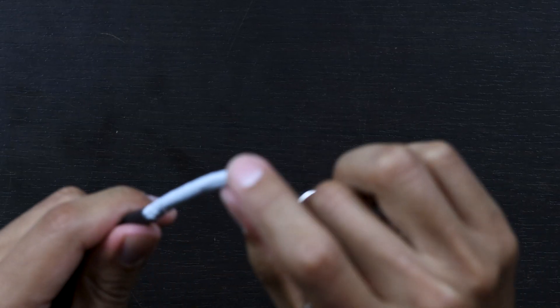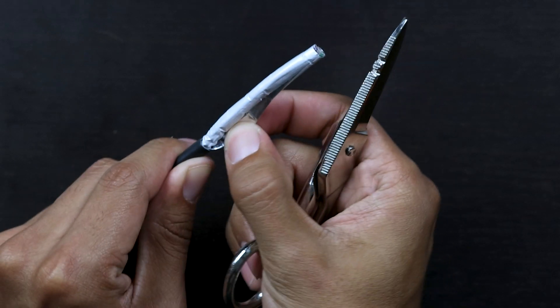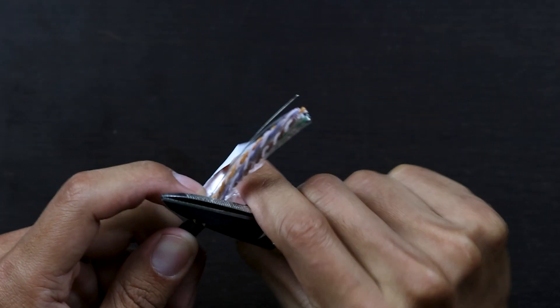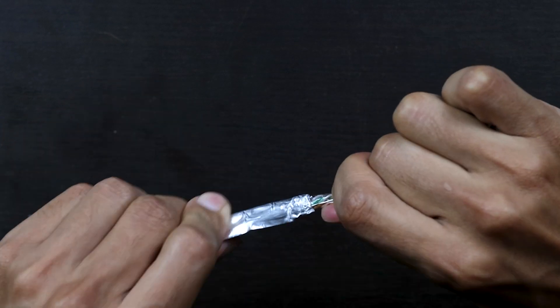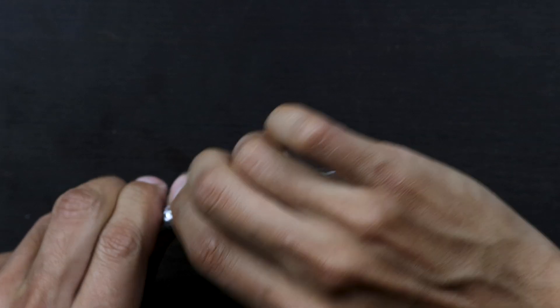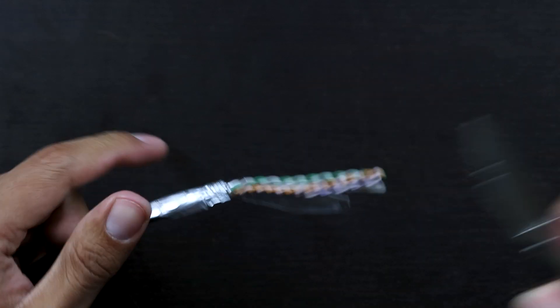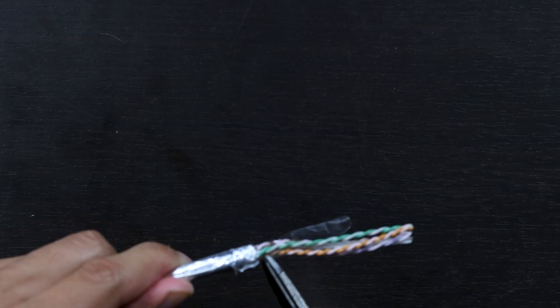And then you're going to take your shield, unwrap it, and you're going to fold it back just like a little cape. And then you're going to take your drain, place it on that shield as well, and you're going to cut off that insulation.